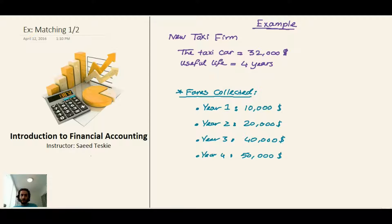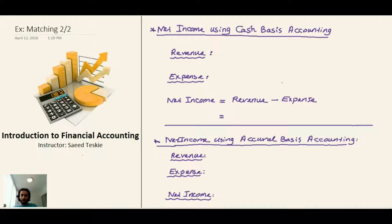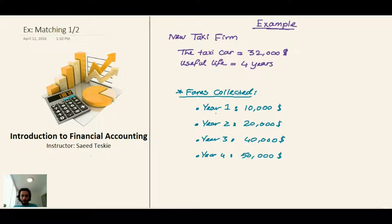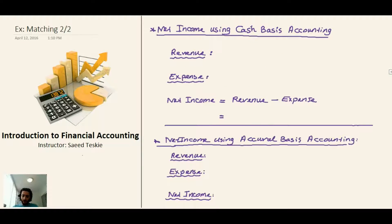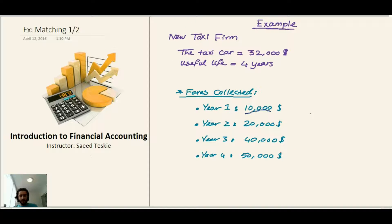You start the business and in the first year you collected $10,000 from your customers. On this page we calculate the net income for the first year using cash basis accounting, then using accrual basis accounting. For the first year, we know that revenue is $10,000.